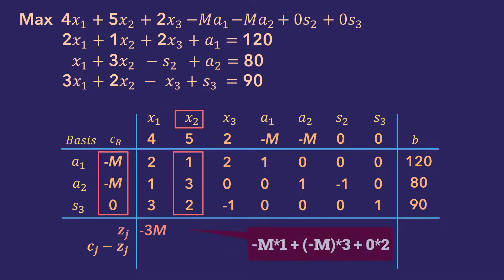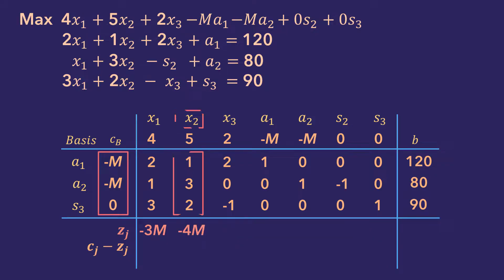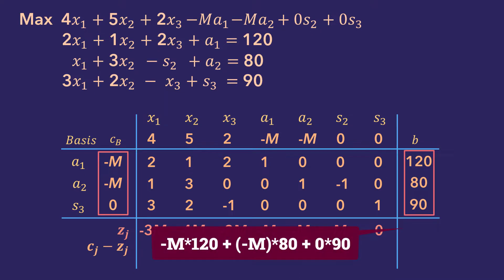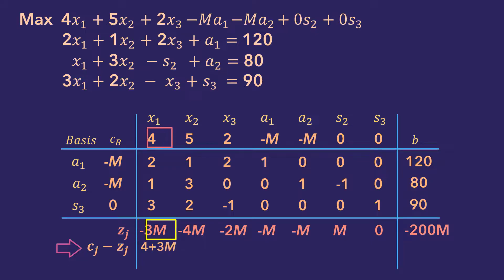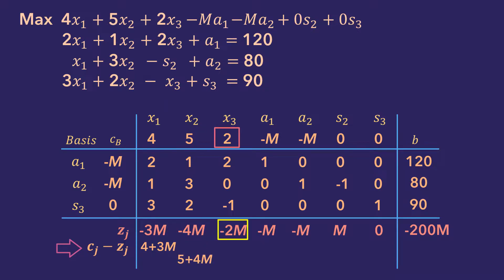For x2, we have minus m times 1 plus minus m times 3 plus 0 times 2, which gives minus 4m. We do the same for the remaining columns. And for the b column, we have minus m times 120 plus minus m times 80 plus 0, which gives minus 200m. Finally, in the net evaluation row for x1, we do 4 minus negative 3m, which gives 4 plus 3m. For x2, 5 minus negative 4m gives 5 plus 4m. For x3, 2 minus negative 2m gives 2 plus 2m, and similarly for the rest of the variables. And that completes the initial tableau for the second example.